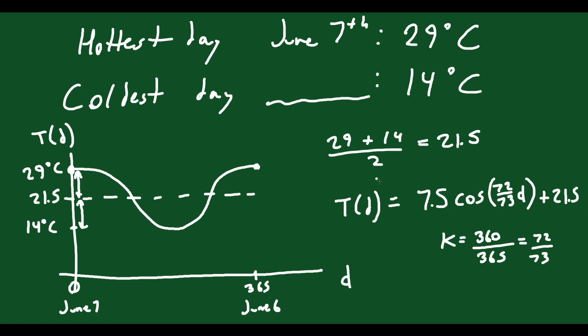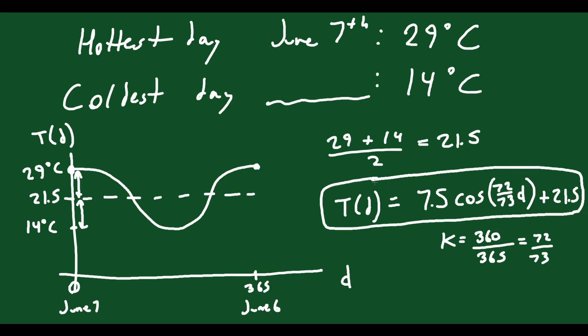The other part of the question is how many days after June 7th is the first spring day when temperatures reach 20 degrees Celsius. You reach 20 degrees Celsius twice — once as it gets colder going into winter, and once as it comes back up through spring. We don't want the first occurrence; we want the spring one. To find it, we set the temperature to 20 and solve for D.